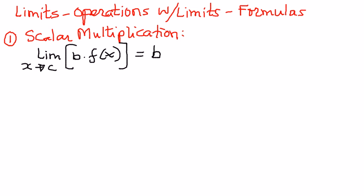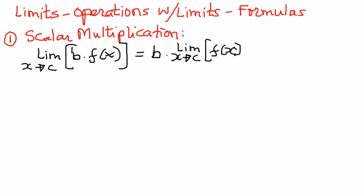Since the constant is not going to change its value, we pull it out of the limit operation and write the constant number times the limit of that function f of x as x approaches c. So a limit of a constant times a function as x approaches c can be written as the constant times the limit of the function as x approaches c. That is the scalar multiplication operation of a limit.